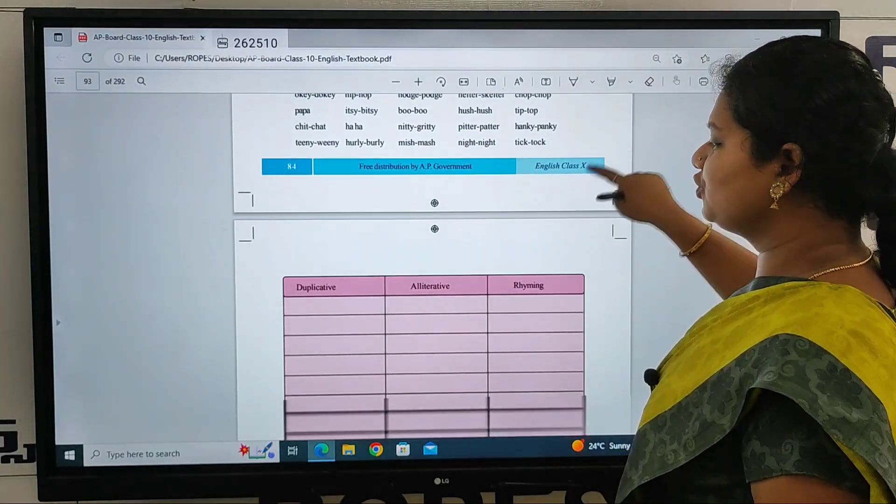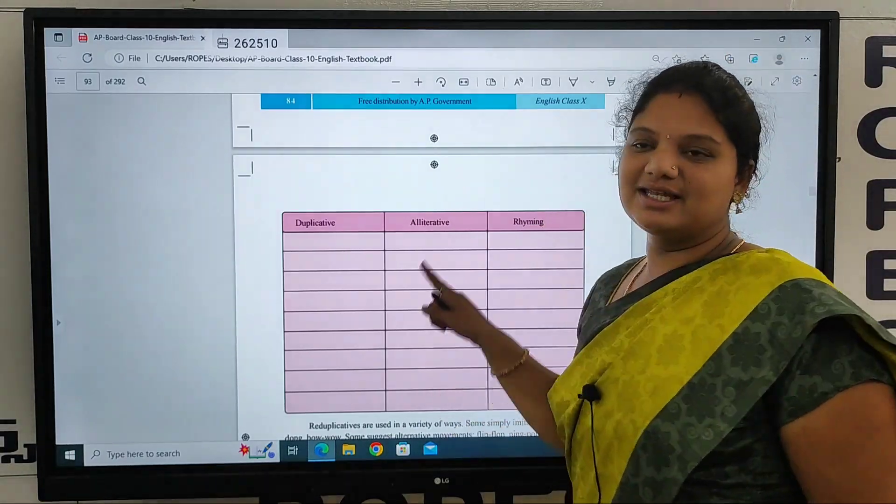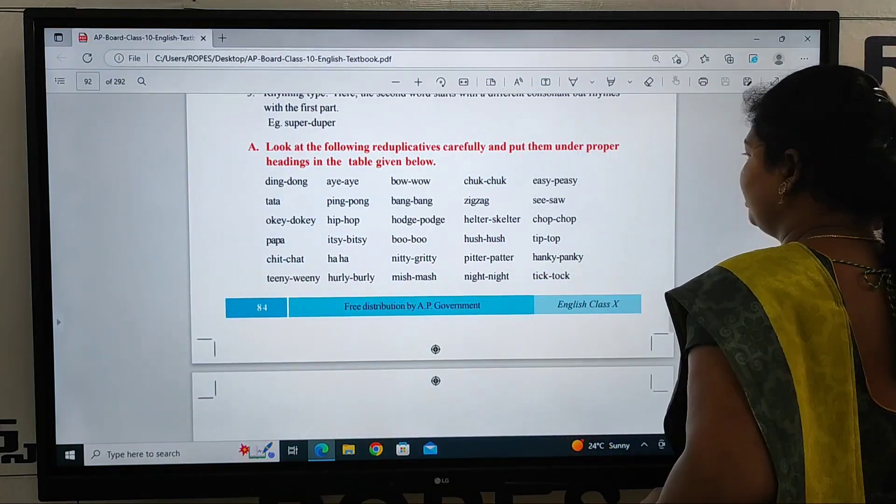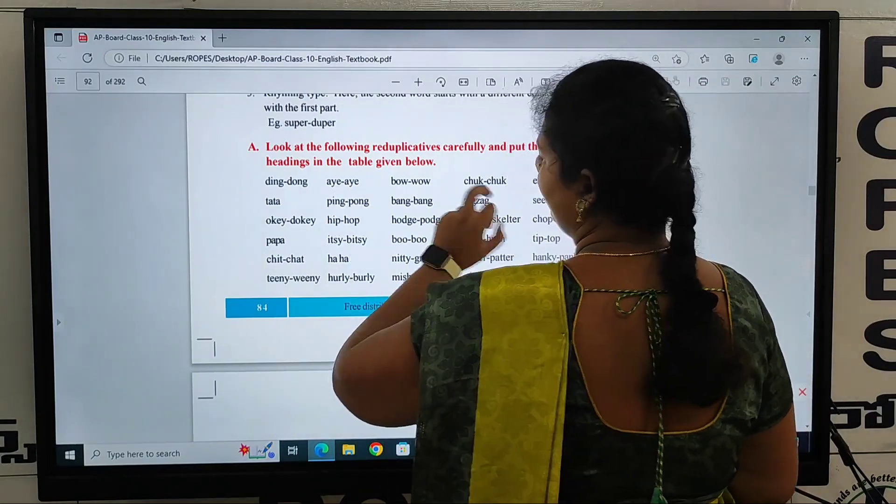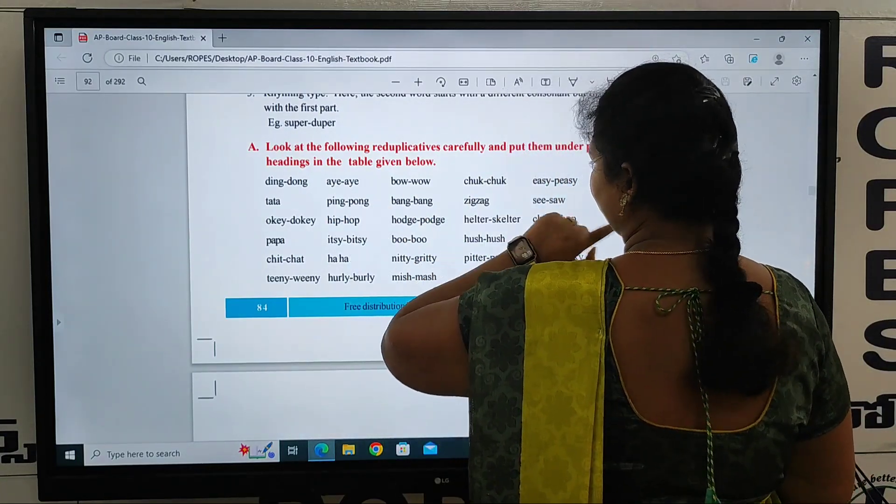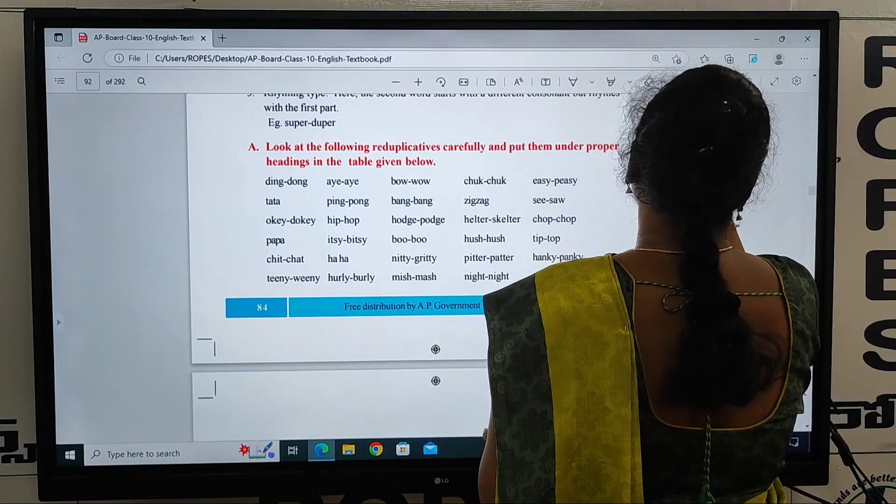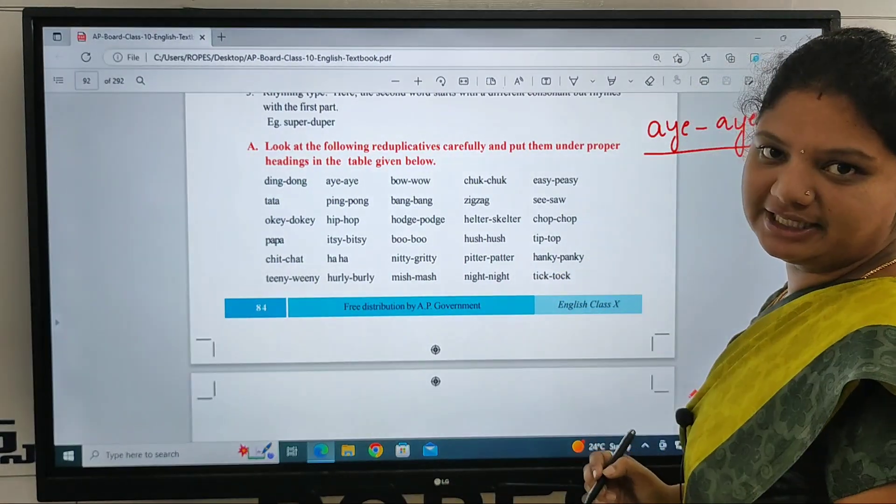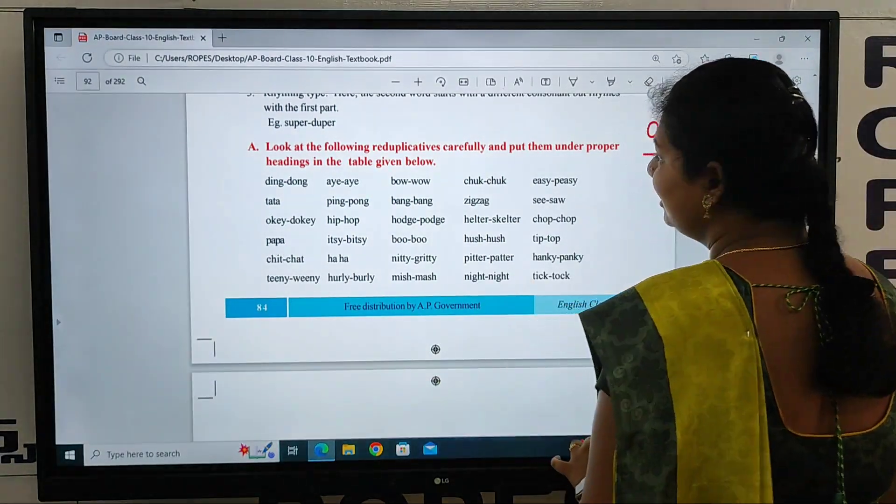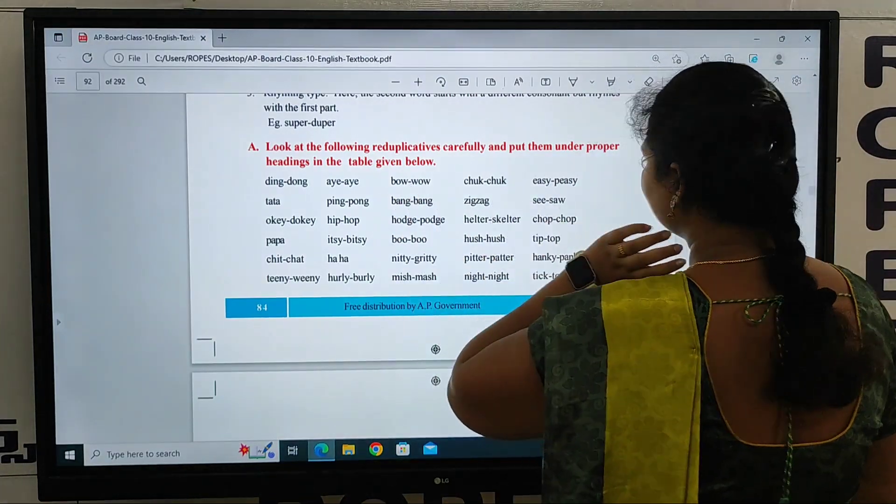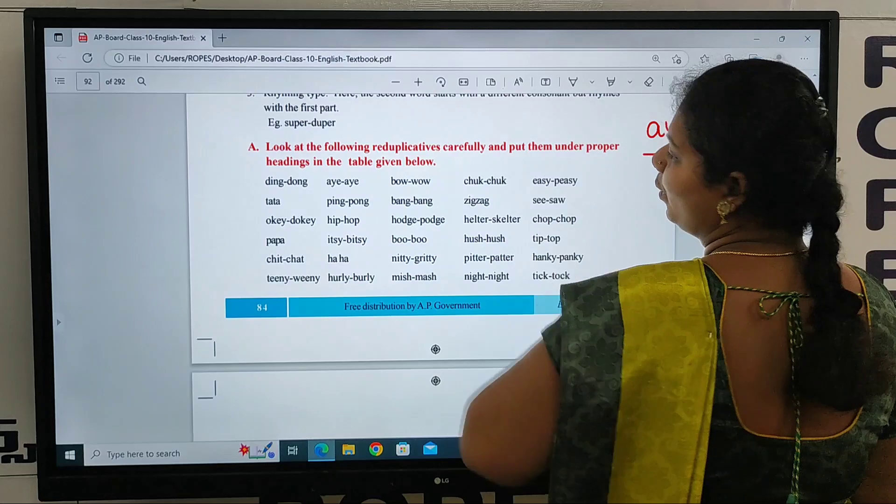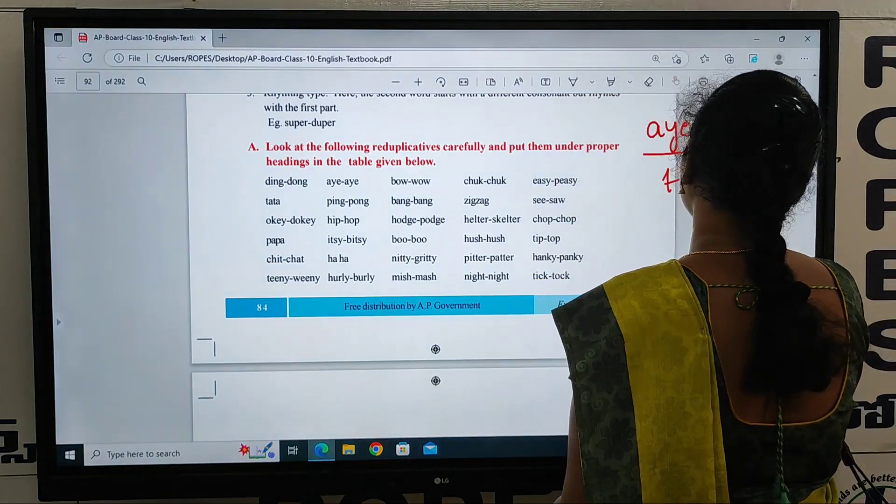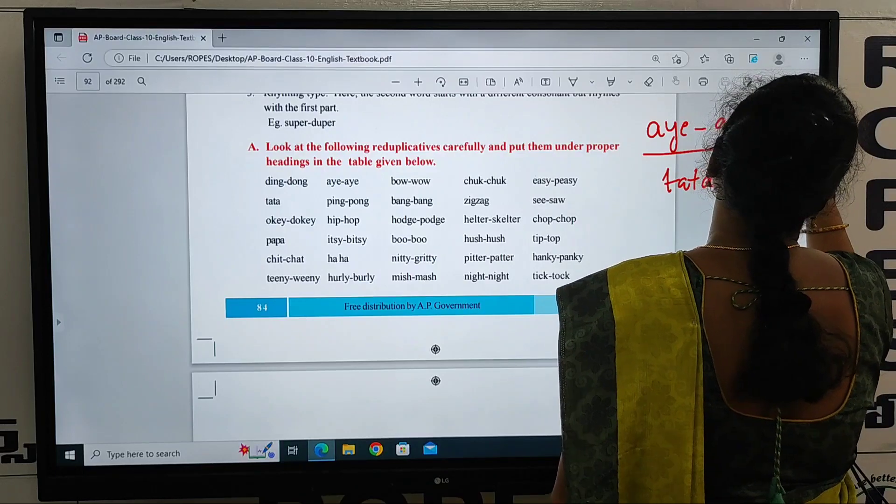So, now reduplicative, alternative, and rhyming. Reduplicative word means, first of all, chuk-chuk. This word means a word repeated. Duplicative. That is alternative, first of all, bang-bang. Bow-wow. And then, alternative word. Tata is a duplicate word.